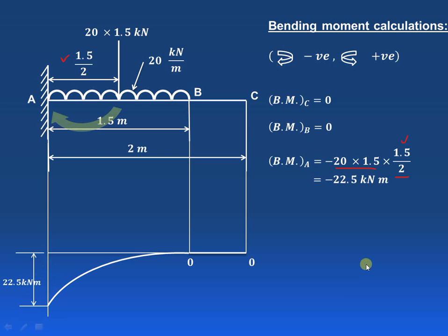Since it is a uniformly distributed load, the bending moment diagram will have a parabolic distribution. The magnitude is 22.5 kilonewton meter, drawn below the baseline because the moment is negative. In this way we can draw the shear force and bending moment diagram for a cantilever beam.